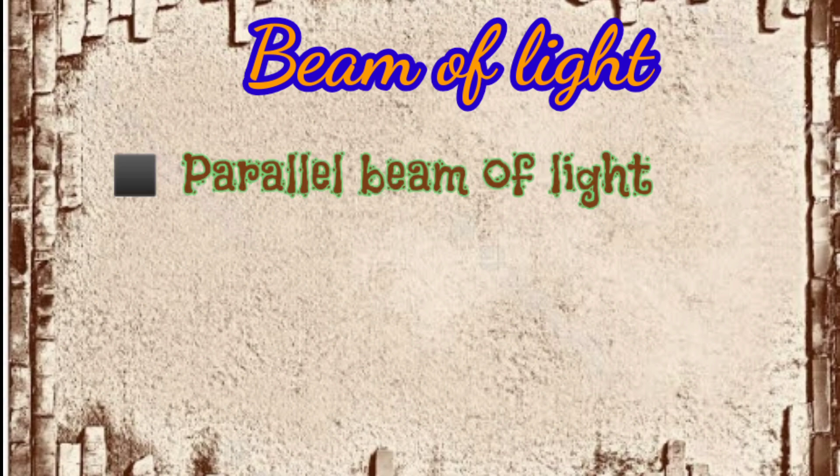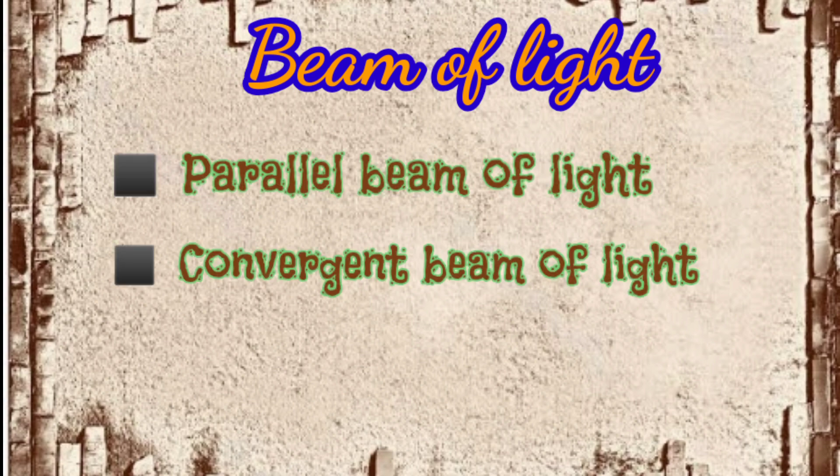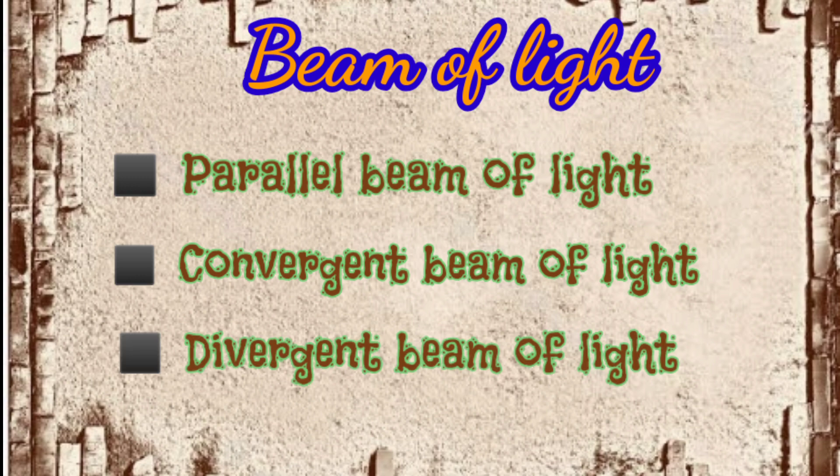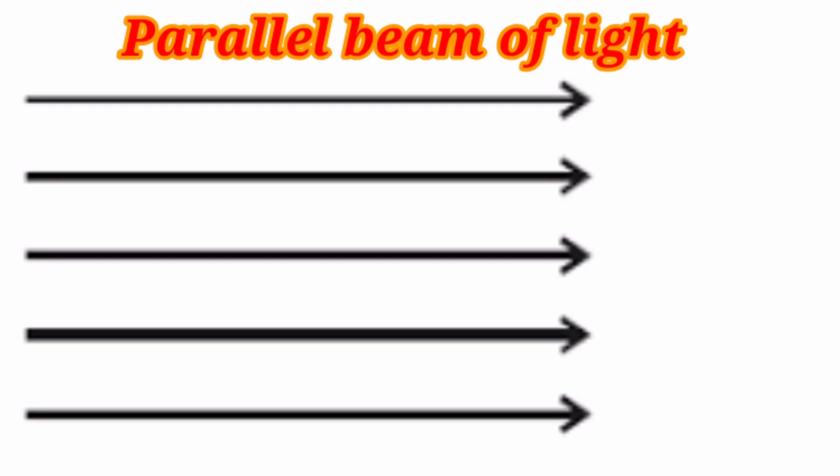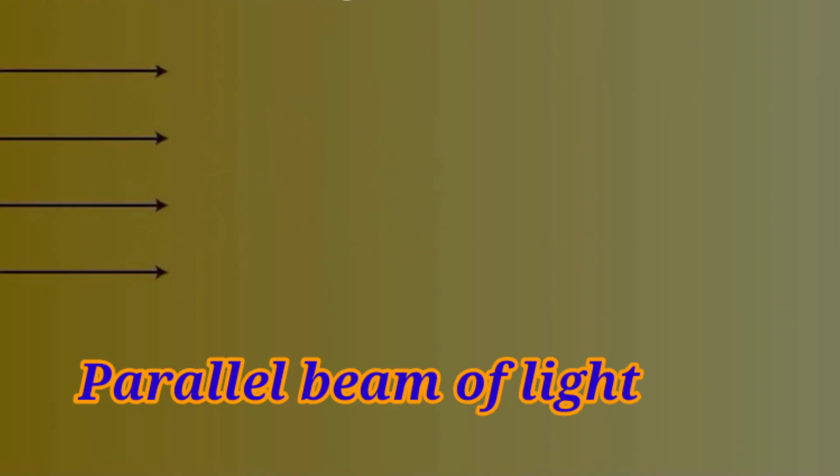These rays may or may not be parallel. There are three kinds of beams of light: parallel beam of light, convergent beam of light, and divergent beam of light.